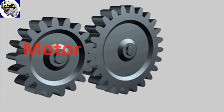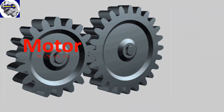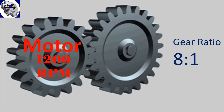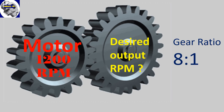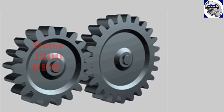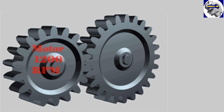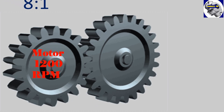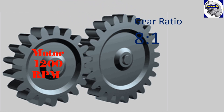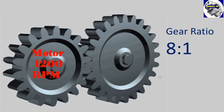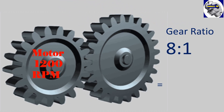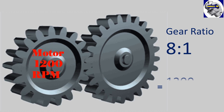For example, if you have a motor running at 1200 RPM and the gear ratio is 8 to 1, the output RPM can be determined as follows. A gear ratio of 8 to 1 means that for every 8 revolutions of the motor, the output shaft will complete 1 revolution. By dividing the motor RPM by the gear ratio, you can determine the output RPM.